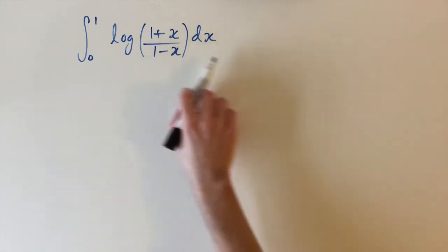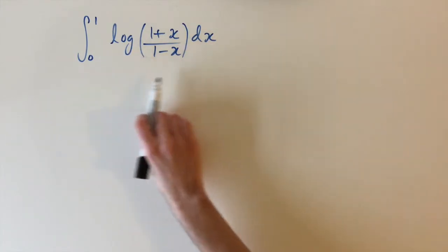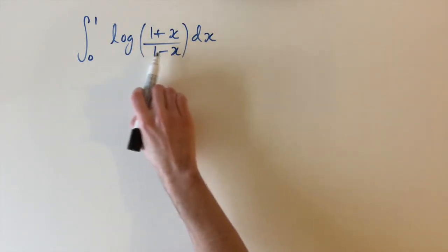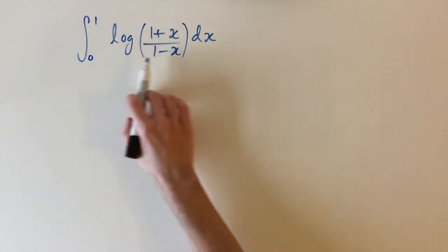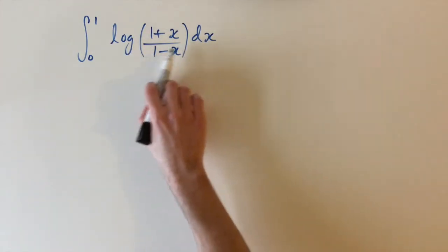Now this is an integral that isn't actually as bad as it looks and this is because we can straight away simplify this. We have the logarithm of a quotient and we can use the law of subtraction to express this as the difference of two logarithms.